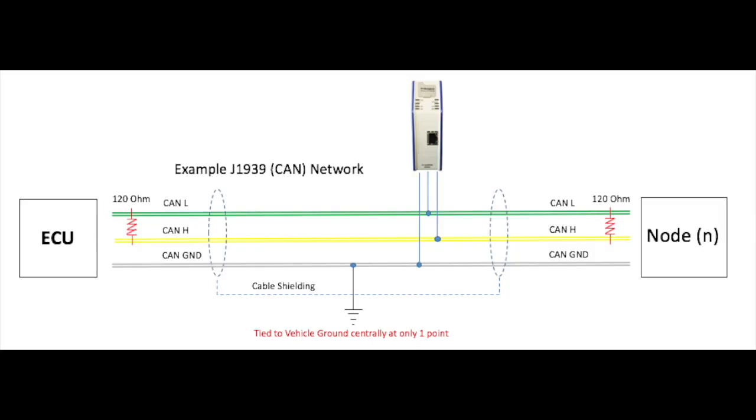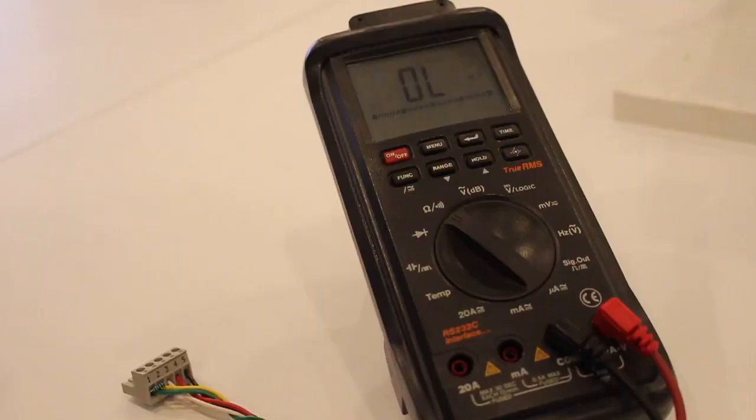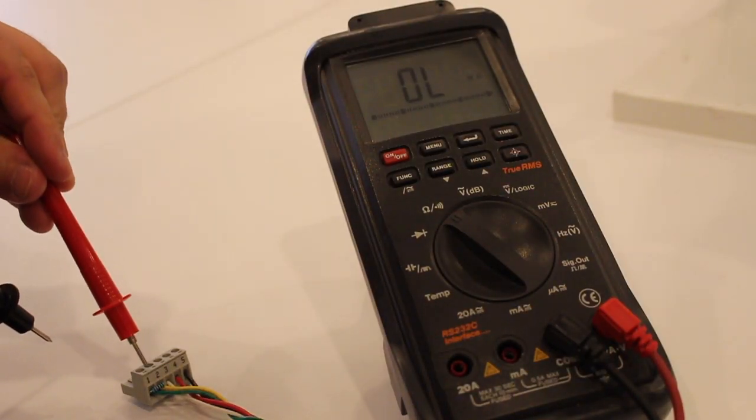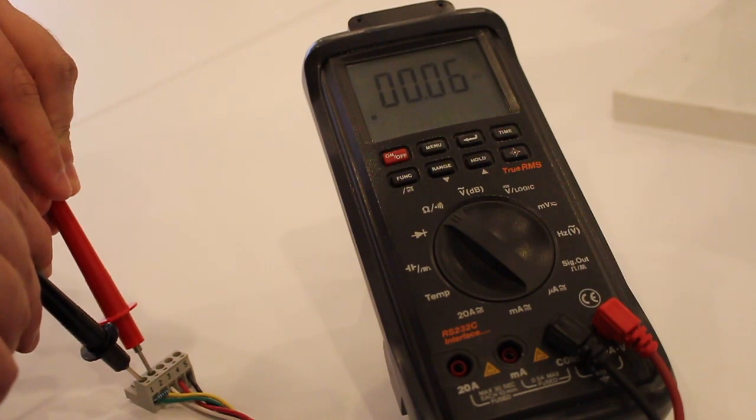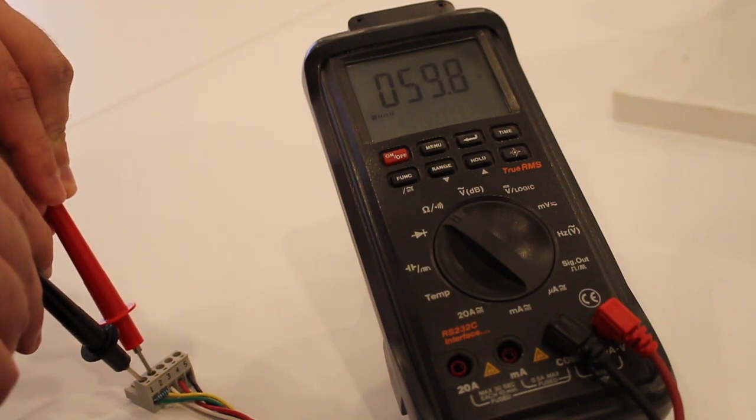Please note that the Bridgeway device does not provide CAN network termination internally. Proper termination should be confirmed during installation. There should only be two 120 ohm terminating resistors on the network, and they should be placed at the ends of the network. To check if your network is terminated properly, measure the resistance across CAN high and CAN low with all network-connected devices powered off. A properly terminated network will measure approximately 60 ohms.